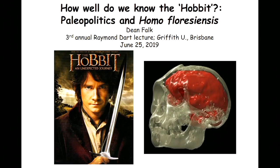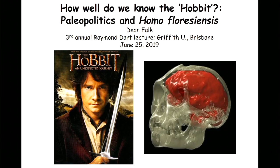Raymond Dart was Australian, and he grew up near here. He grew up on a farm. He was in a very religious family. He had a keen intellect and a curious mind. He became interested in medicine and went to medical school. And he had an experience here in Australia where Grafton Elliot Smith came over from England and gave a talk on brain evolution. By then, Dart was a young man, and he said to himself, that's what I want to do — I want to go to London and study with those people. And he eventually was able to do that.